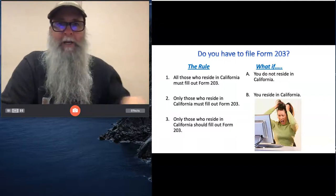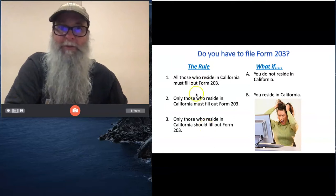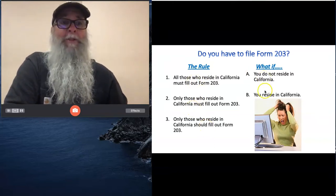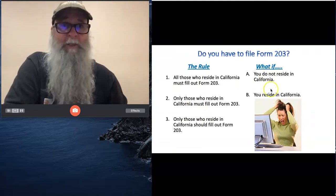Form 203. Here's the way this works. There are three possible rules that could be in effect at any given moment in time. There are two possible sets of circumstances that could exist at any moment in time.